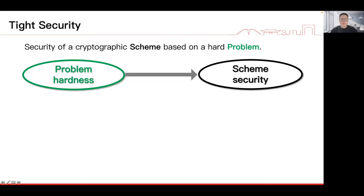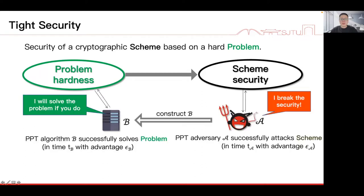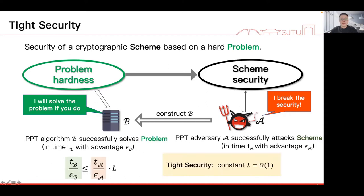To prove the security of a cryptographic scheme like KEM, a common way is to base the scheme's security on the hardness of a well-studied problem through a security reduction. A security reduction turns any adversary A running in time TA, breaking the scheme's security with advantage epsilon_A, into an adversary B running in time TB, solving the hard problem with advantage epsilon_B. A reduction establishes an inequality between TB over epsilon_B and TA over epsilon_A with a factor L, called the security loss factor, which measures the quality of the reduction and is smaller the better. It is desirable to have L be a constant. If a cryptographic scheme has a security reduction with a constant loss factor, we call it tight security.